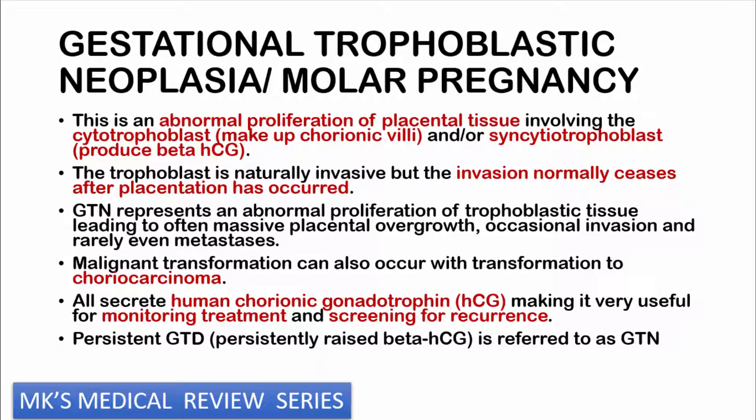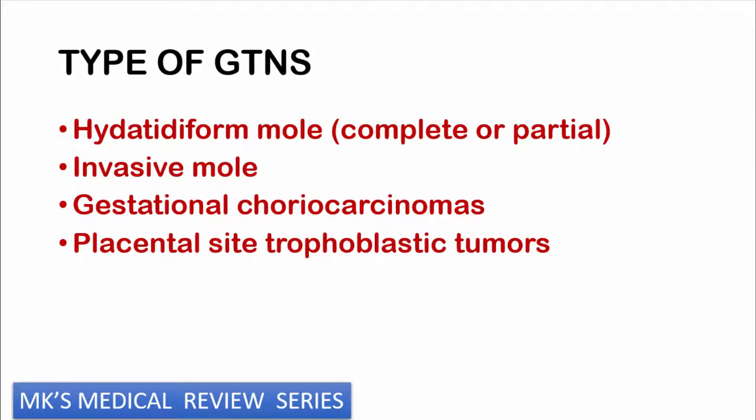When we're talking about gestational trophoblastic neoplasia or GTN, this is an abnormal proliferation of trophoblastic tissue that often leads to massive placental overgrowth, occasional invasion, and rarely metastasis. There is some chance of it transforming into a malignancy and it may become a choriocarcinoma, which is a malignant tumour. All these gestational trophoblastic neoplasms produce beta-HCG, making it a very useful tool for monitoring treatment and screening for recurrence. Persistently raised beta-HCG is referred to as gestational trophoblastic neoplasia.